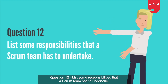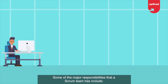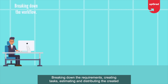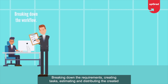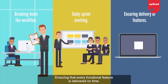Question 12: List some responsibilities that a Scrum team has to undertake. Some of the major responsibilities of a Scrum team include breaking down the requirements, creating tasks, estimating and distributing the created tasks, organizing daily sprint meetings, and ensuring that every functional feature is delivered on time.